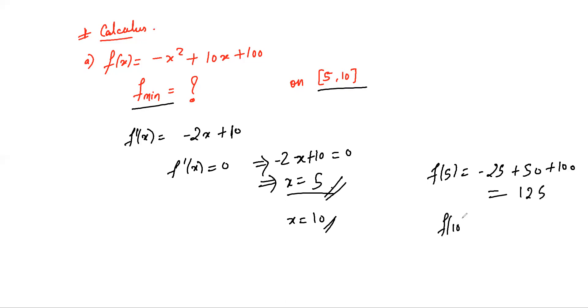f(10) = -100 + 100 + 100, which is equal to 100. And hence 100 is less than 125, and our minimum value is 100.